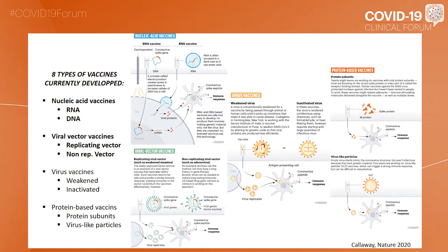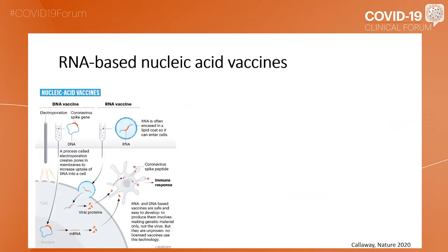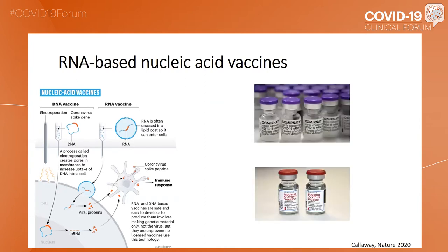I will particularly highlight the nucleic acid vaccine RNA and viral vector vaccines — non-replicating vectors — because those vaccines are the ones that are now commercialized. There are RNA-based nucleic acid vaccines, and two of them are currently commercialized: Comirnaty and Moderna. I will focus my talk on the safety of those vaccines.